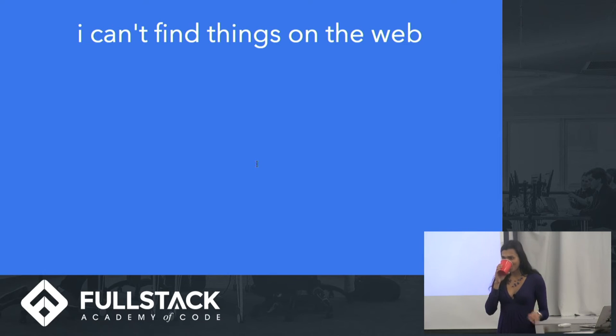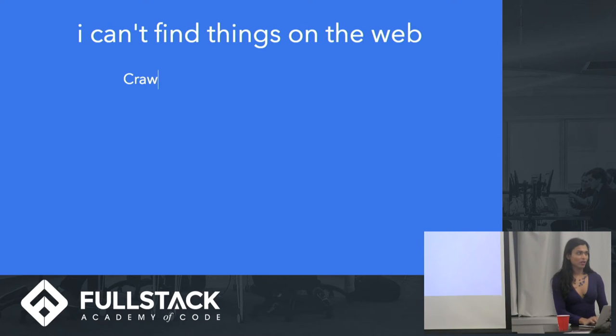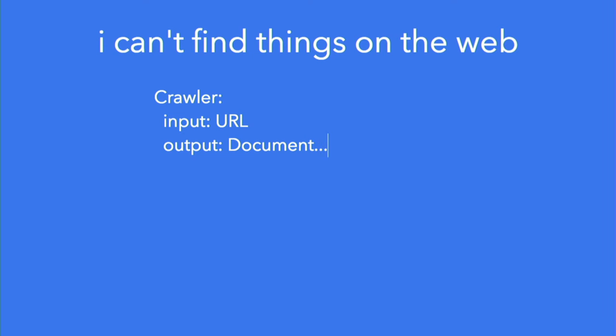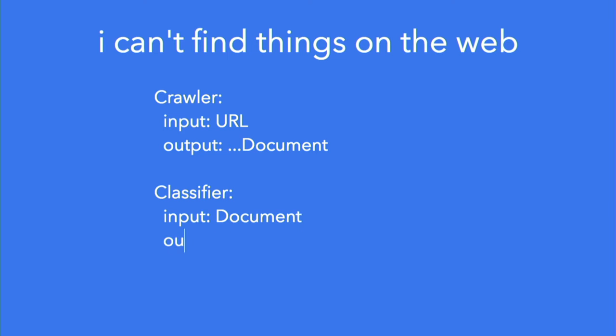So we need to crawl some web pages — we're going to have a crawler. Let's say it takes one URL and outputs a bunch of documents. It does that by crawling from that URL to some depth, or forever. We can figure out the specifics later. And then someone noted we should classify web pages based on keywords — so that sounds like it should take a document and output something. Let's say it returns all of the search terms, maybe minus stop words — things like 'and', 'but', 'the' — that you discard because they don't have much semantic meaning. So it can be a list of terms.